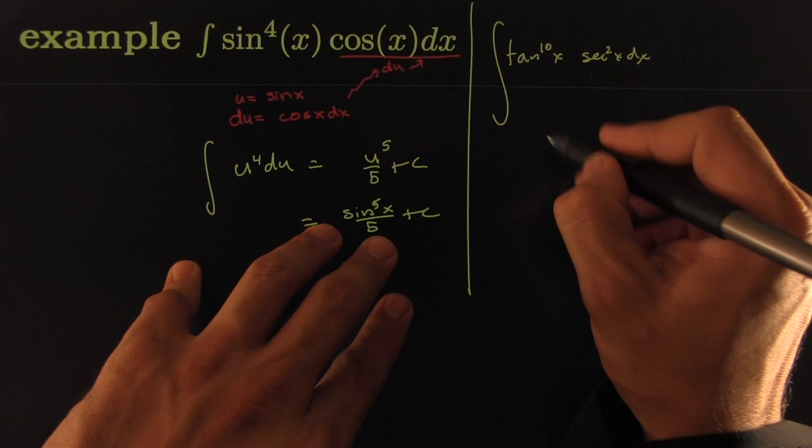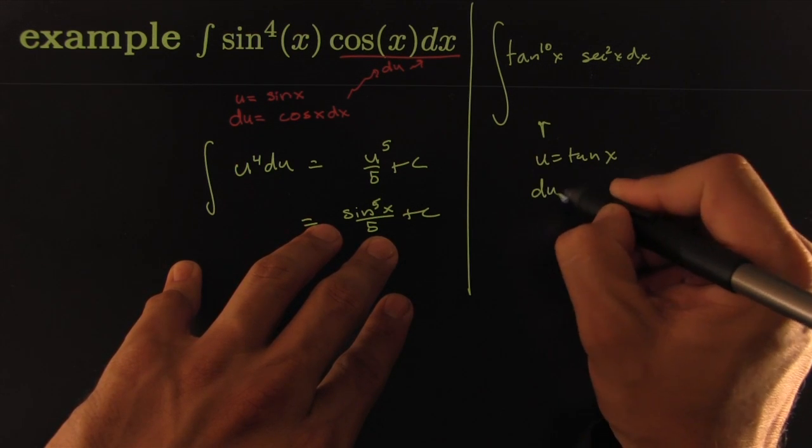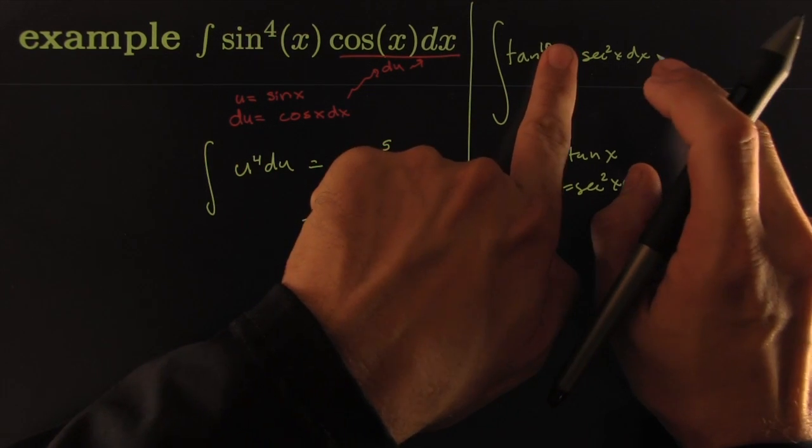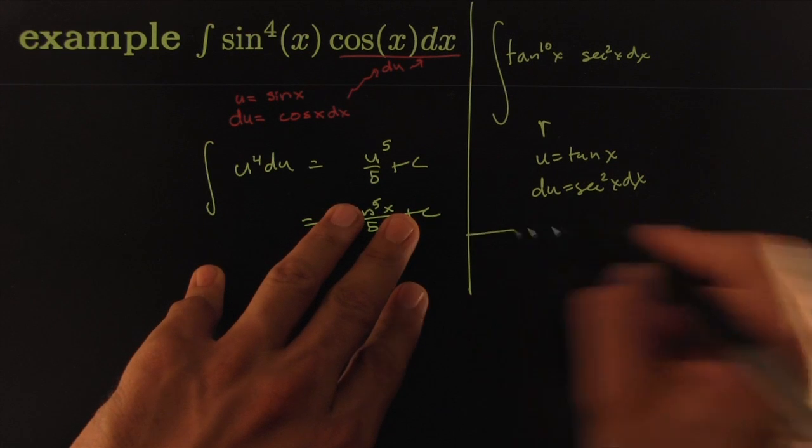It's obvious that in this case if you made u be your tangent of x. Your differential would be secant squared of x dx. And so your differential is already here. Your du and you just have u to the 10th. It's a famous, famous strategy here.